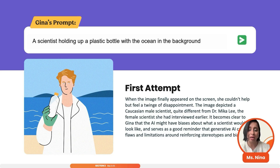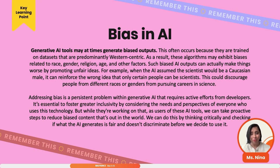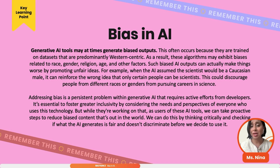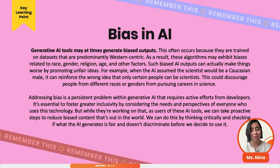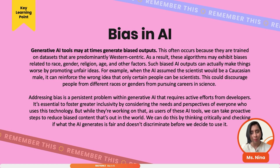What is bias in AI and why does it happen? It happens because the data sets AI has trained on are predominantly Western in nature. A lot of these AI products are made in the West, so they have a bias toward that — exhibiting bias in terms of race, gender, religion, age, and multiple other factors. It often has very unfair assumptions, like a scientist would be male or white. These are things we don't want to reinforce. We need to critically think through what the product is giving us — it is not a fact checker; it takes a pattern and predicts, and that prediction is not always a reflection of the real world.